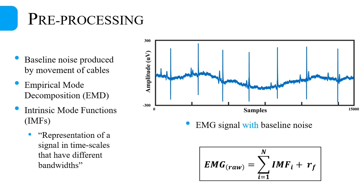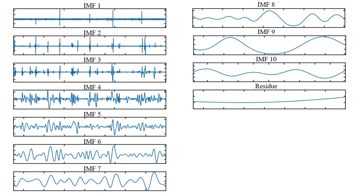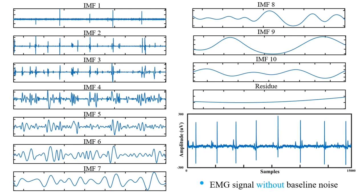The final residual is what is left behind in the signal after extraction of the IMFs and it contains the lowest frequencies. These are the IMFs, and it can be seen that each successive IMF contains lower frequency oscillations than the preceding one. The denoised EMG signal is just the linear sum of the first N minus M IMFs.